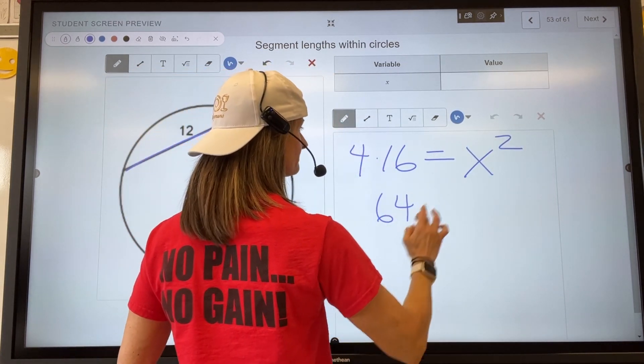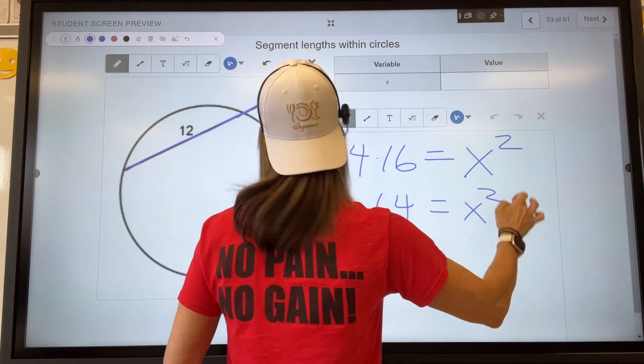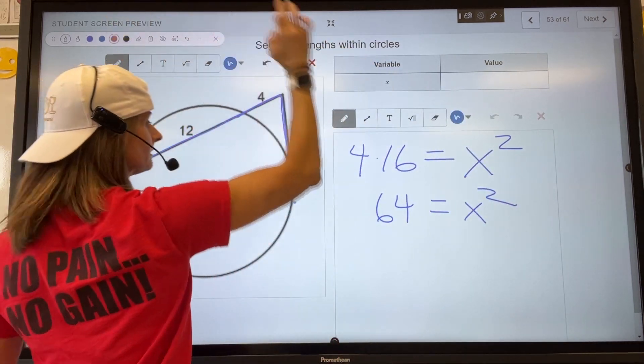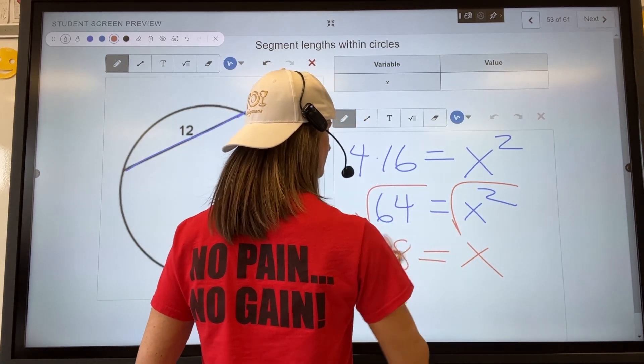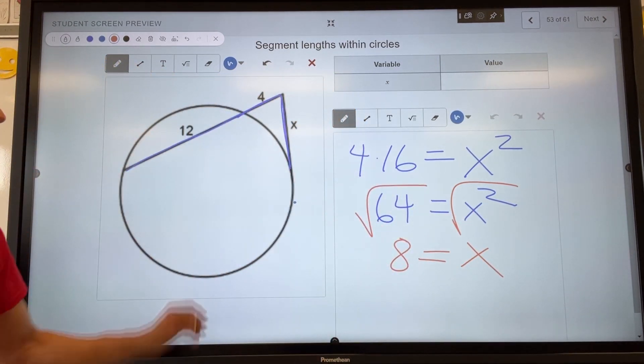This is 64 square root, and we're in geometry, so this is going to be a length, so it's just going to be positive, so x is equal to 8.